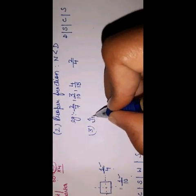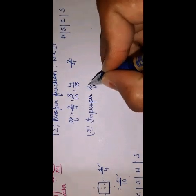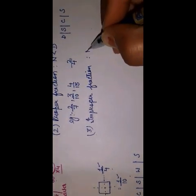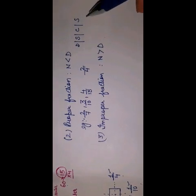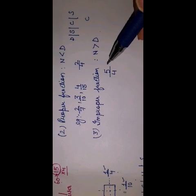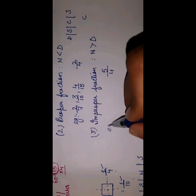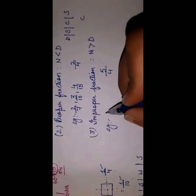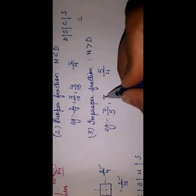Third one: improper fractions — jo proper selections pe depend nahi karti, jisme numerator is always greater than denominator. Jaise teacher ne aapko 4 activities di lekin instead of taking 2, you selected all 4 and you are doing one extra. That means particular 4 activities thi but you are doing 5 activities, so this is improper fraction. Examples: 5 by 4, 7 by 5, 3 by 2, 11 by 6.